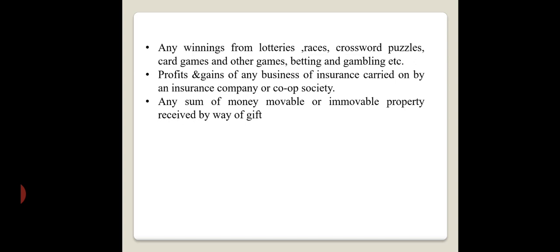Betting, gambling, etc. are also income. The profit and gains of any business of insurance carried on by an insurance company or cooperative society are treated as income. Any sum of money or movable or immovable property received by way of gift — if you are receiving a gift in the form of movable or immovable property — is to be treated as income.